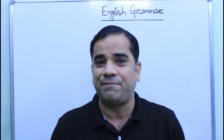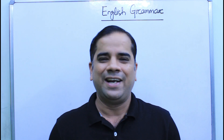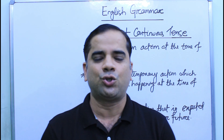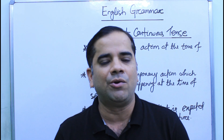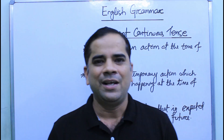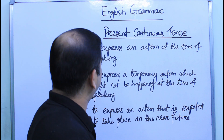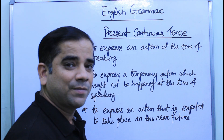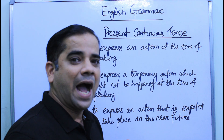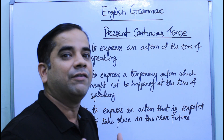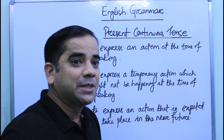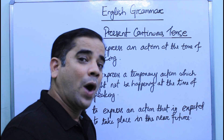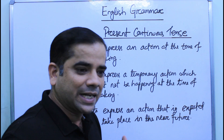Present continuous tense is also called present progressive tense. The words 'continuous' or 'progressive' show the continuation or progression of any action. Present continuous tense is used to express an action at the time of speaking. For example, my action right now is to give a lecture — I am speaking, I am giving a lecture. This is my present action.